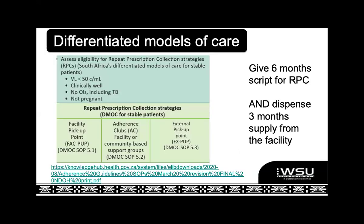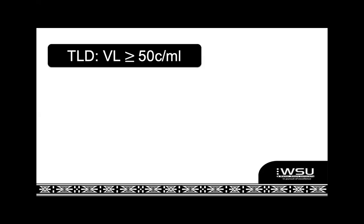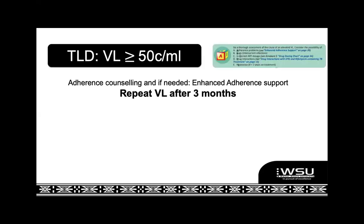This comes out of the adherence guidelines, which have a very strong drive towards three-monthly supplies of treatment. Especially if you're out in the CHCs, really try to give patients three months' supply if there's no reason for them to come back sooner. We also need to talk about what happens when your TLD viral load is over 50, because you're going to start seeing patients like that — we have to do our ABCD assessment.